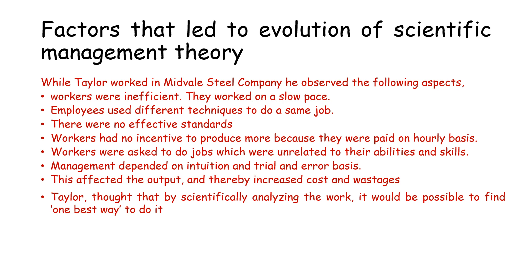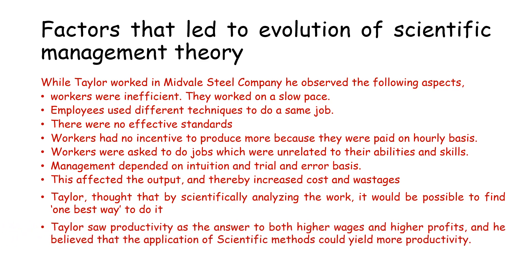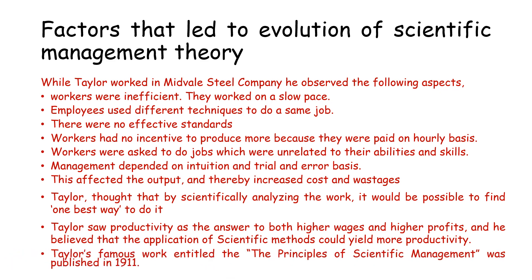Taylor thought that by scientifically analyzing the work, it would be possible to find one best way to do it. He came up with his most famous work on scientific management, wherein he saw productivity as the answer to both higher wages and higher profits, and believed that the application of scientific methods could yield more productivity. His famous work, The Principles of Scientific Management, was published in the year 1911.